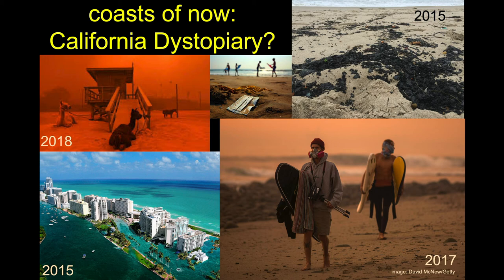Scrolling down to the lower right: surfers going out in Ventura during the Thomas Fire, one guy with a buff, another with an N95 mask — which now we're all used to thanks to COVID, but at the time it was very weird. And previously in this lecture: flooded Miami, the beautiful city being destroyed by the sea.